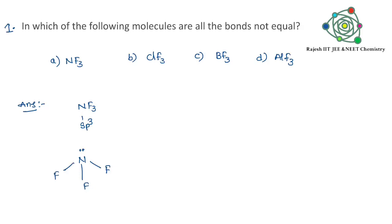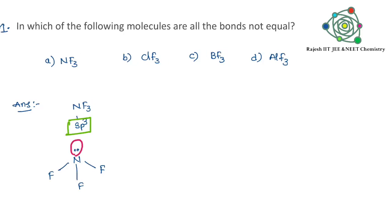Taking the first example, NF3 is a pyramidal structure. Nitrogen has one lone pair on its head, so obviously all bonds are equal. We do not have any problem with this.